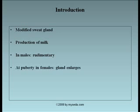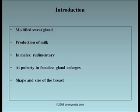At puberty in females, under the influence of ovarian hormone, glands enlarge and the breast becomes hemispherical in shape. The contour and the size of the breast are mainly produced by subcutaneous fat, except during pregnancy when the mammary gland enlarges and new glandular tissue forms. The shape and size of the breast changes with age.